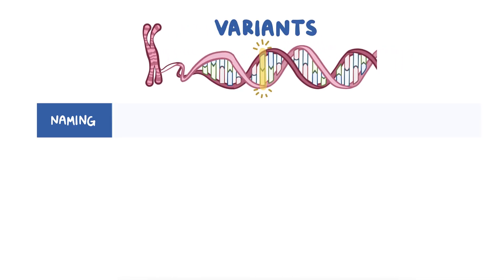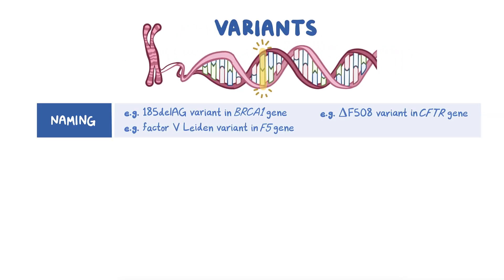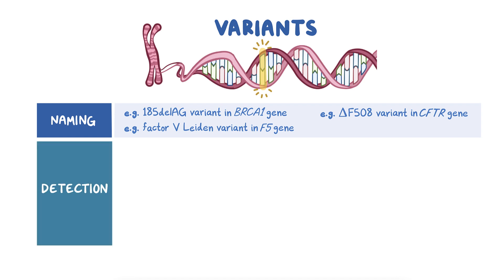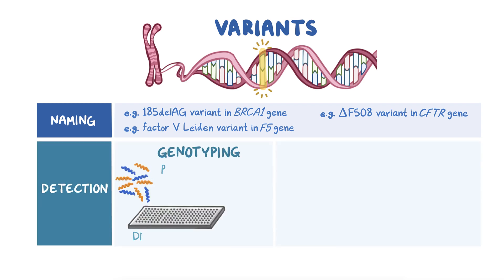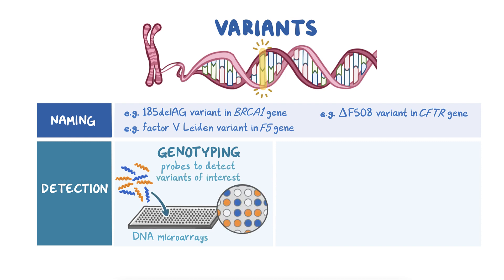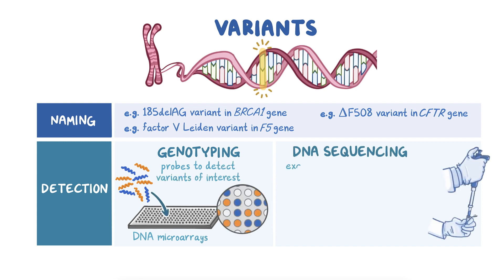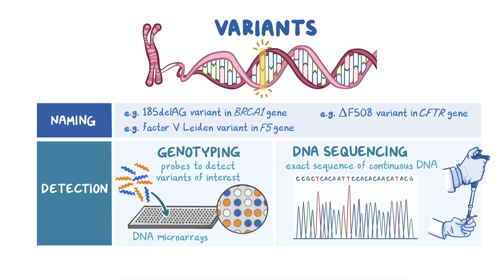Variants are named using a combination of letters, numbers, and symbols, but can also have descriptive names. There are numerous molecular techniques used to detect the presence of variants. One is genotyping, which uses DNA microarrays to look for variants of interest. Another is DNA sequencing, which determines the exact sequence of a continuous section of DNA.